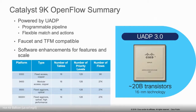Looking at the platform summary, you can see the types of use cases — whether fixed or modular, copper or optical. In terms of features and functionality, today all of them support up to 16 tables and 128 priority levels. These numbers can be changed if needed — it's a software change. The number of flows is more hardware-related, but we have ways to increase that number.